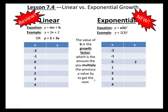Then the value of b is the growth factor, which is the amount that you will multiply the previous value by to get the next value in an exponential one. Here the growth factor is 3, so as long as our x values are increasing by 1, we are going to multiply our y values by 3. 2 times 3 gives us 6.